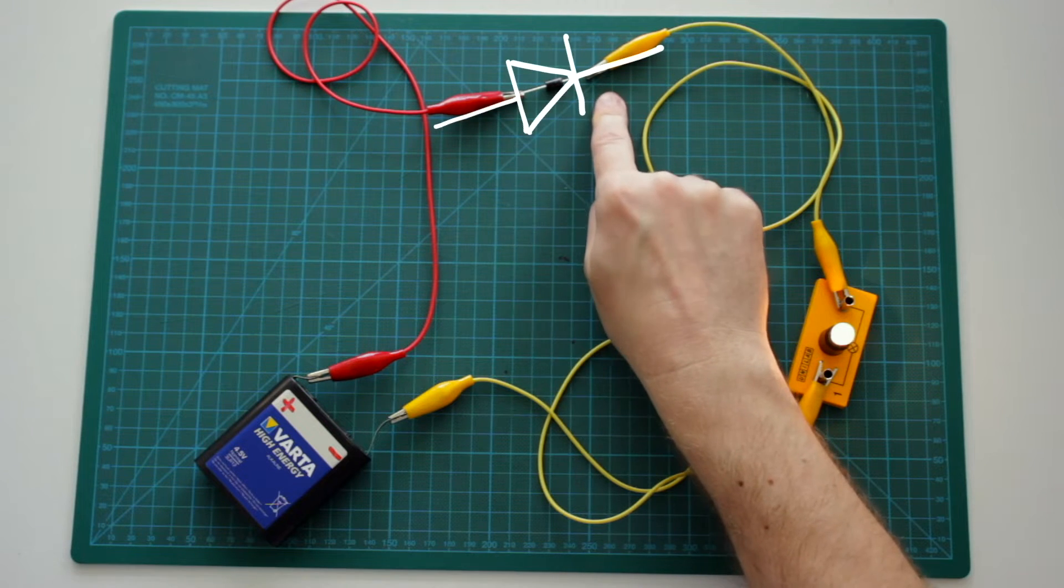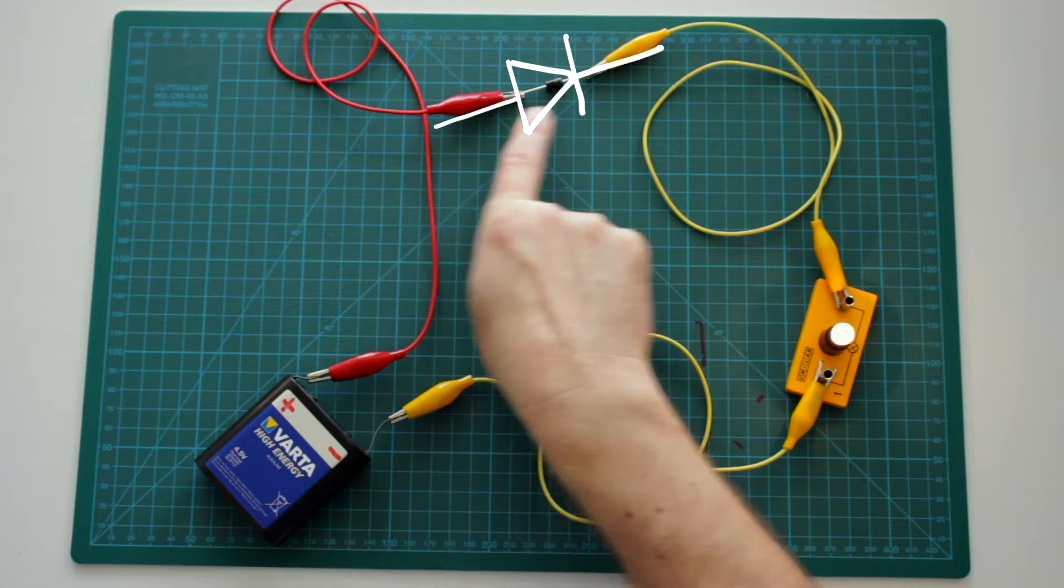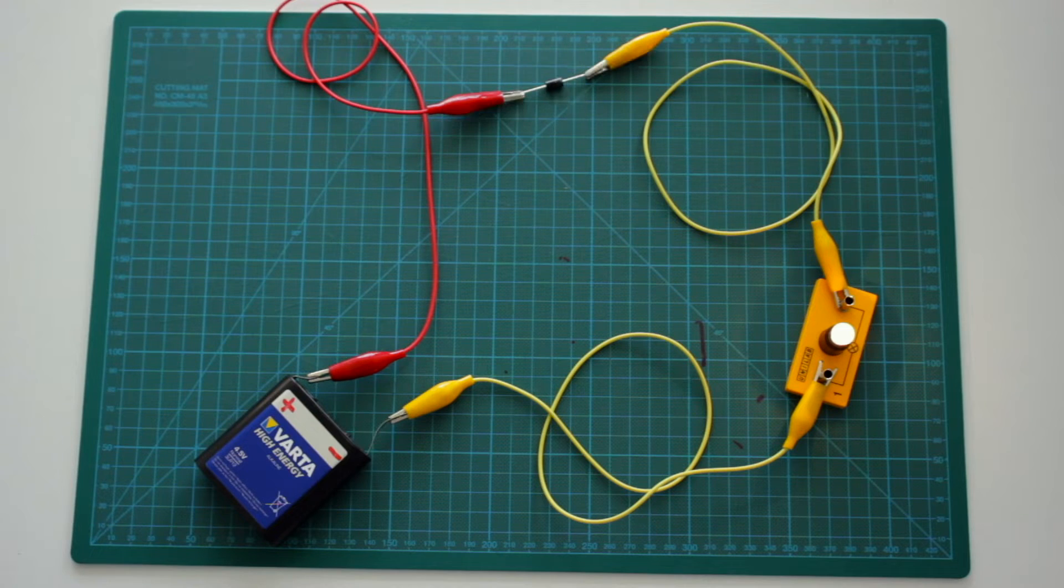This is the anode, and this is the cathode. So now the diode allows the current to flow through the circuit.